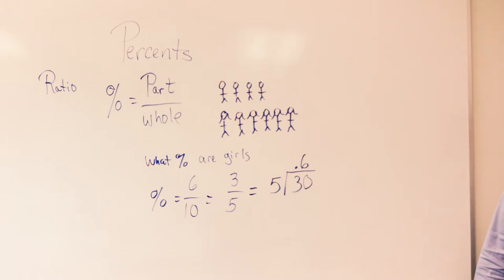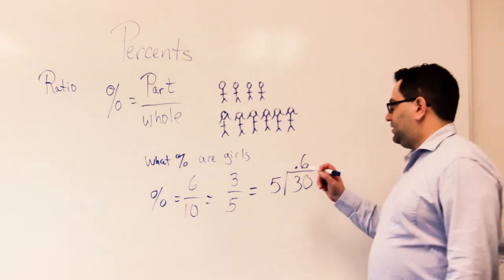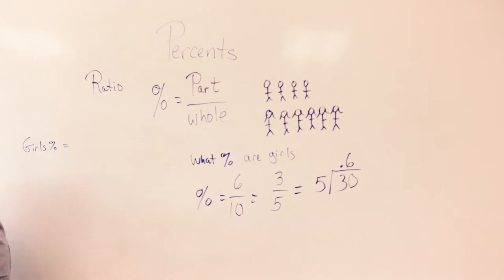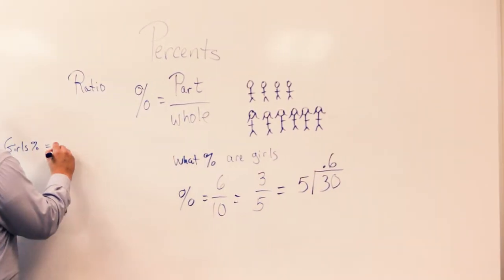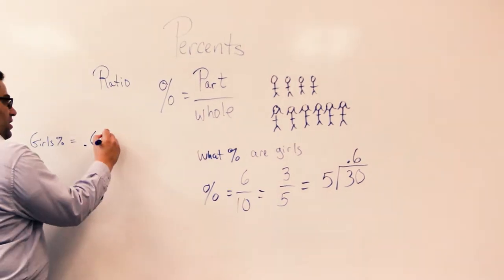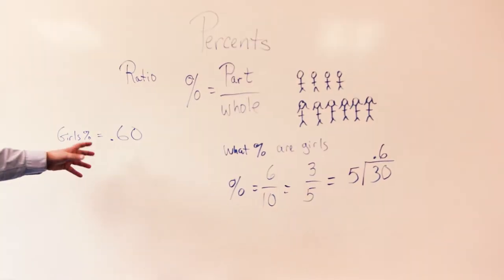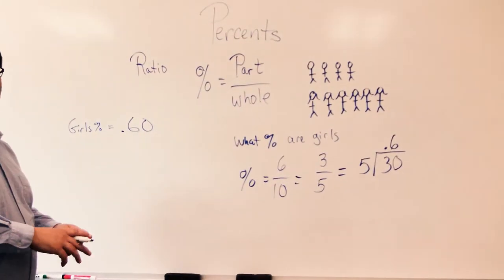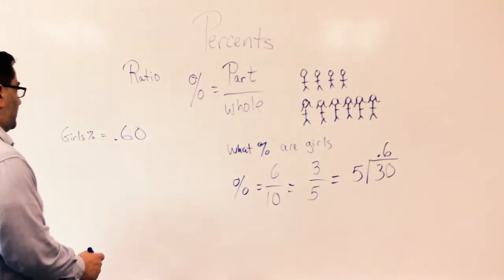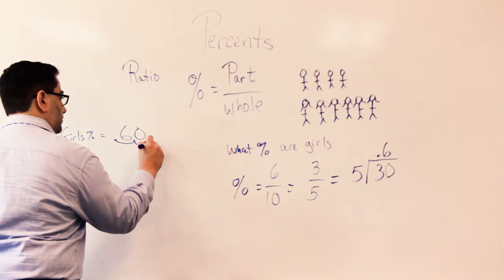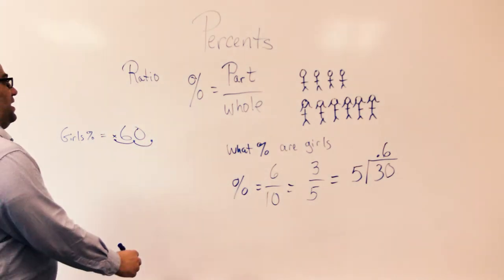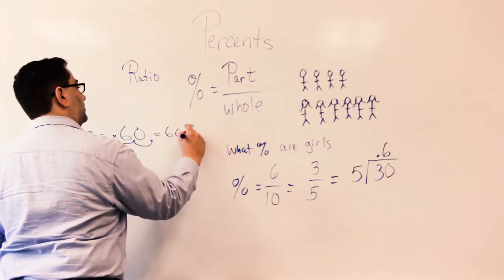It still doesn't look like the percentages that I'm accustomed to. Well, at this point the girls' percentage is equal to point six. Point six can be written as point six zero. When we're looking for percentages as we're accustomed to them, we have to move the decimal point two positions. So my starting point was here, I moved once, I moved twice, and I get 60%.